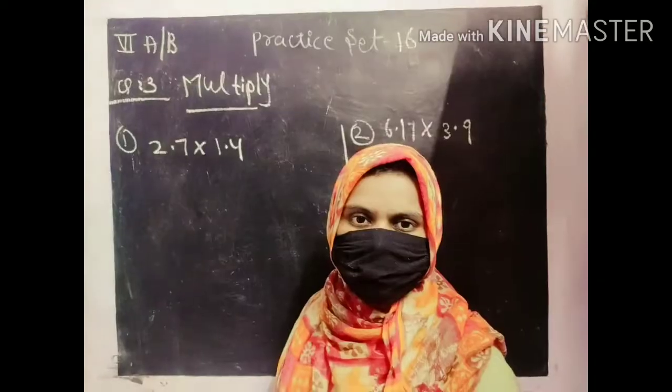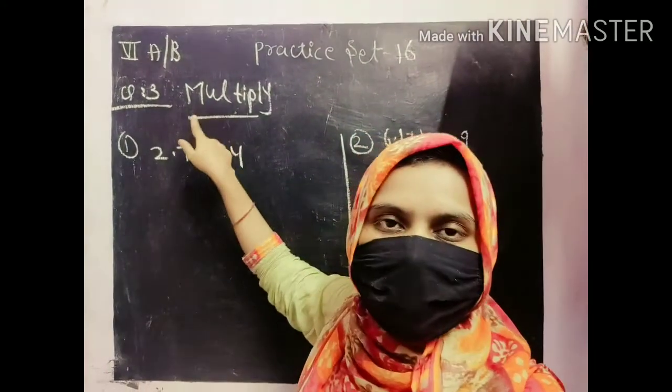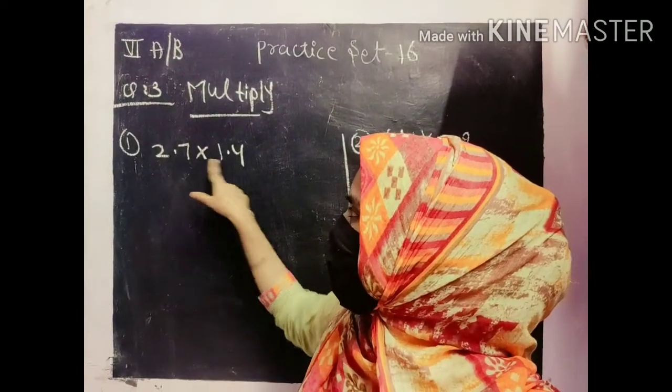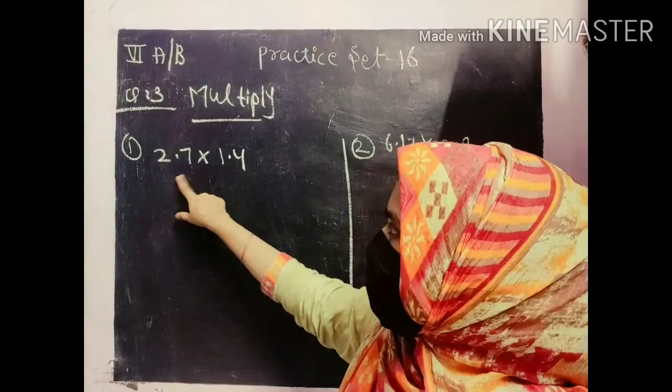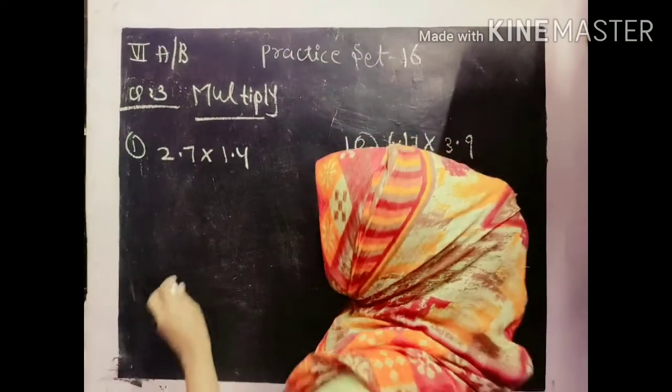Now come to question number 3, multiply. Which means we have to do multiplication. But in which form? Decimal form. Here decimal numbers have been given. So we have to multiply decimal form.